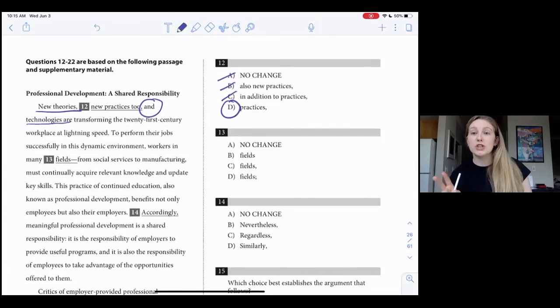Okay, so there are two approaches to this. The first is that it's a list, so it needs to be in parallel format. The second is looking at repetition and conciseness, which we know that SAT really values. In order to not be repetitive, I shouldn't repeat the word new, and I also shouldn't repeat anything that indicates also or in addition.